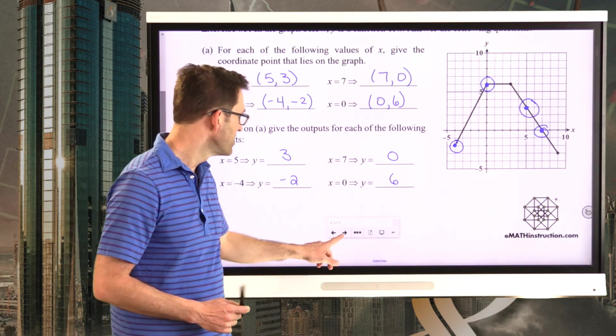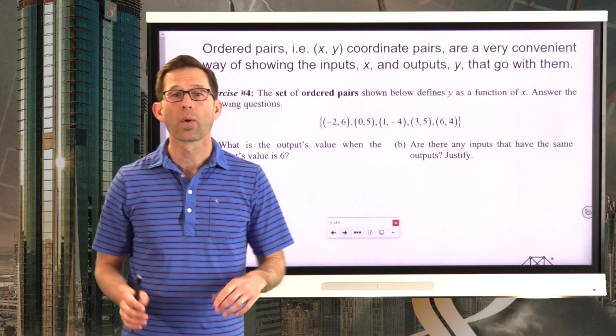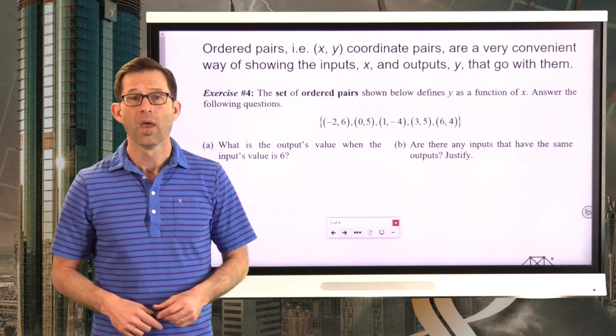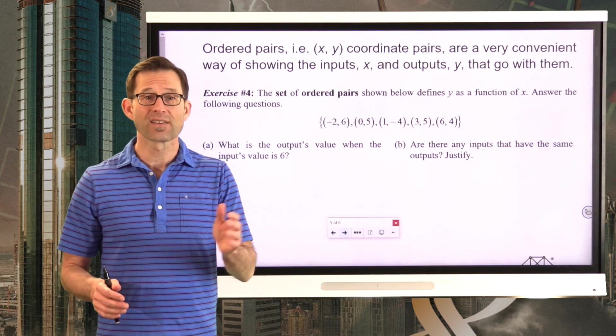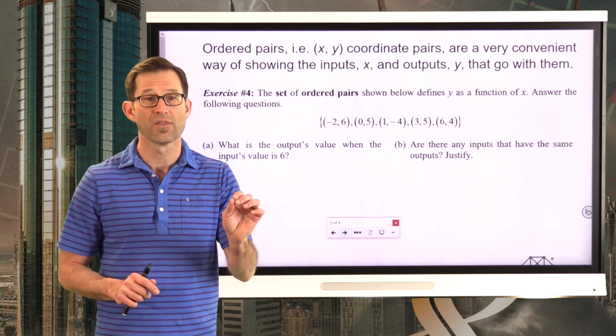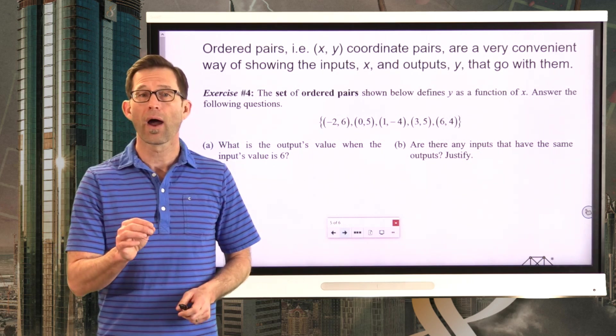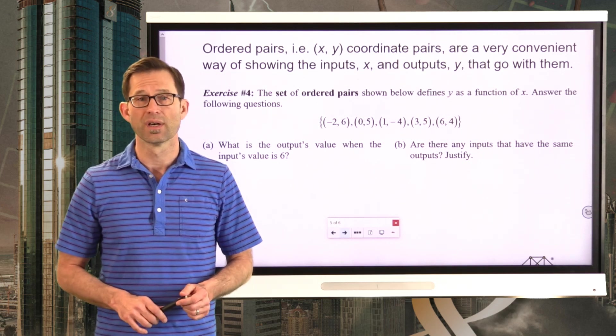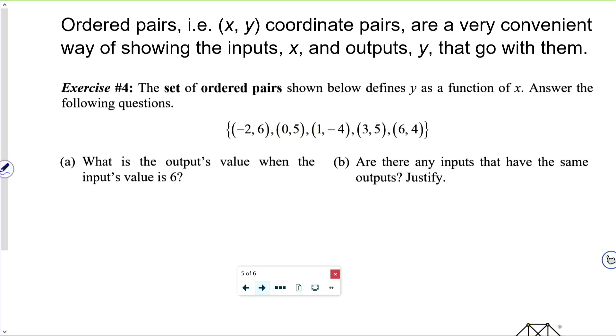All right. Let's keep going and take a look at one last problem where we represent a function using a set of ordered pairs. So ordered pairs, i.e. x comma y coordinate pairs, are a very convenient way of showing the inputs, the x values, along with their outputs, the y values, that go with them. Let's take a look at that in exercise number 4. The set of ordered pairs shown below defines y as a function of x. Answer the following questions.